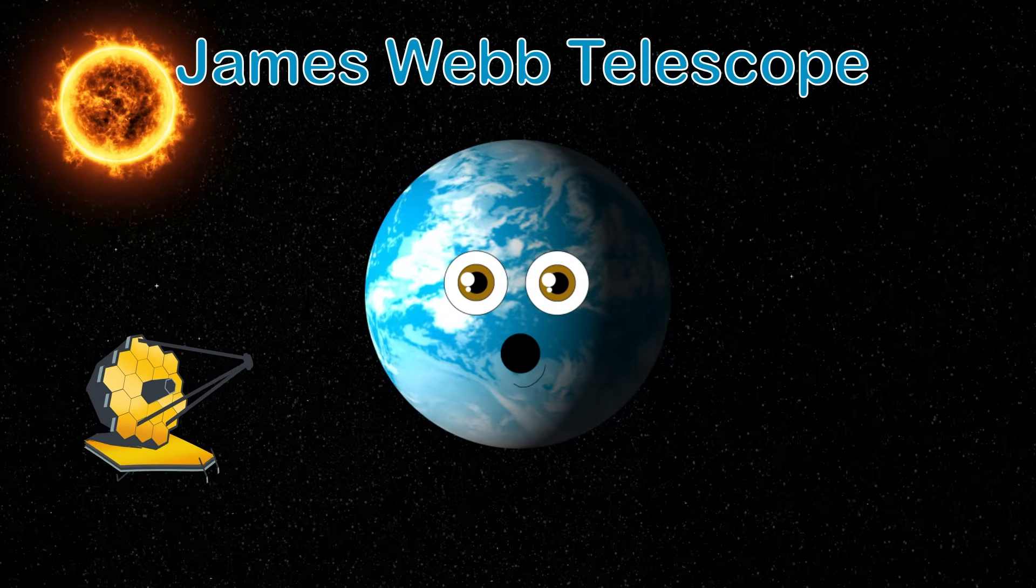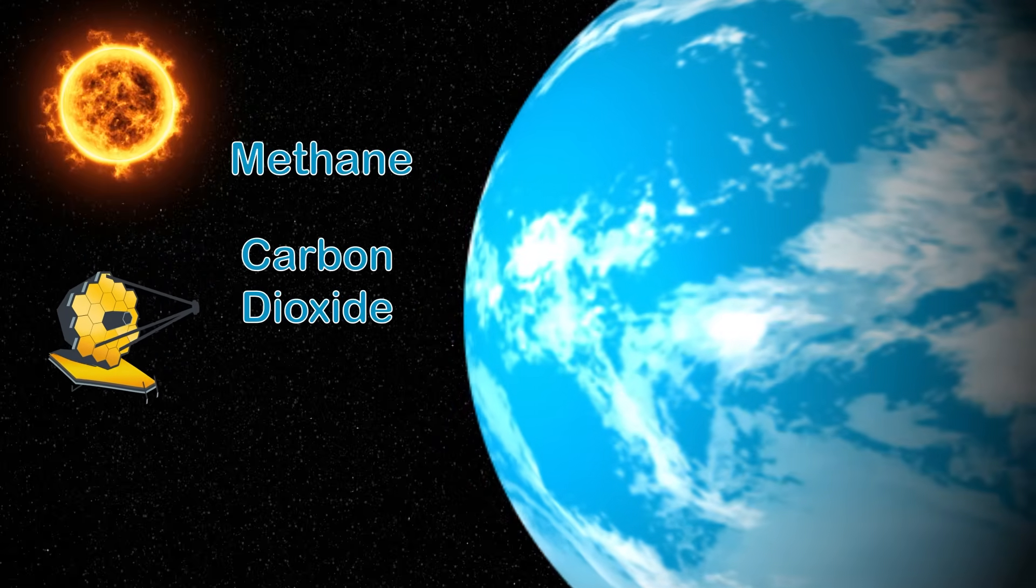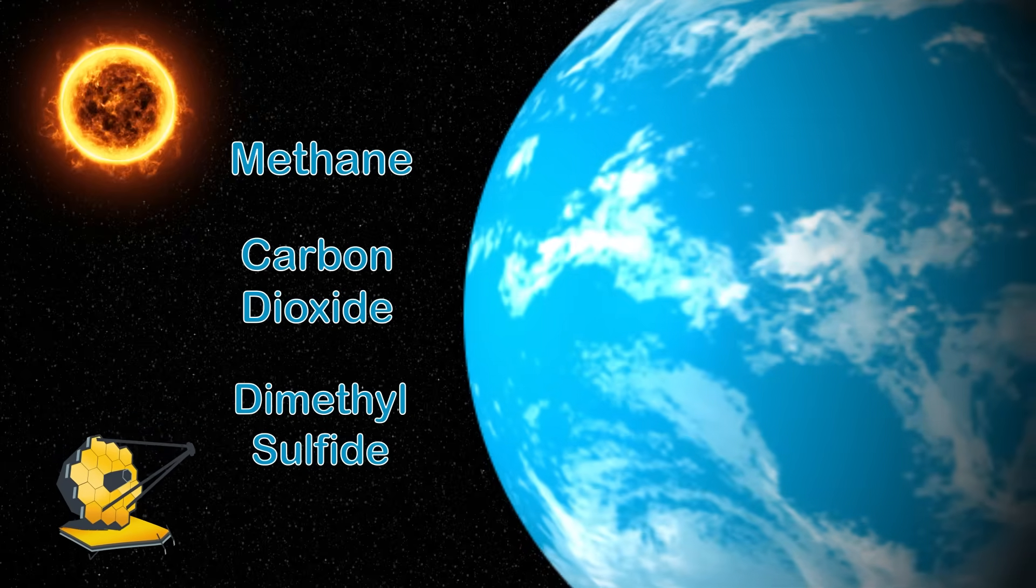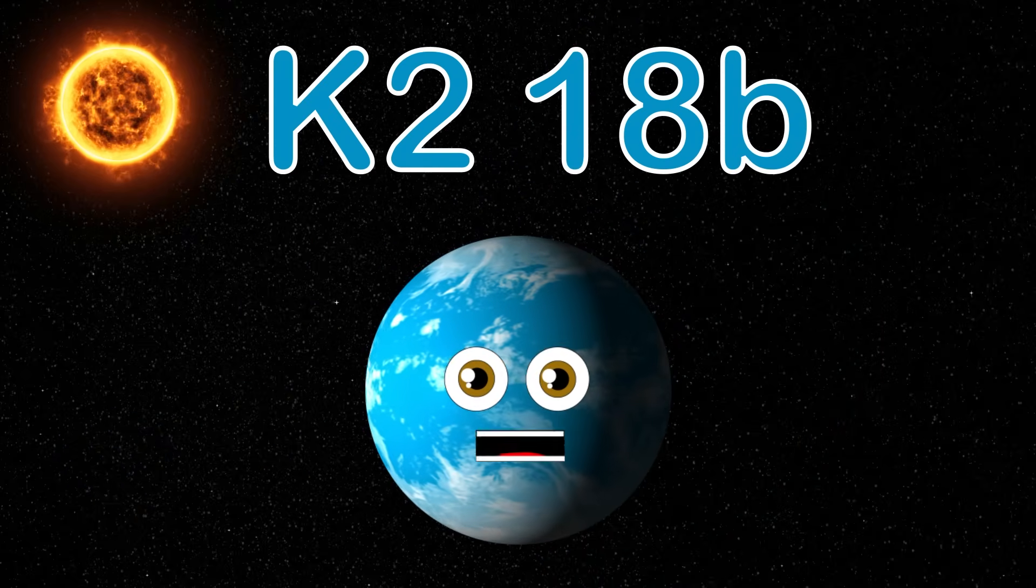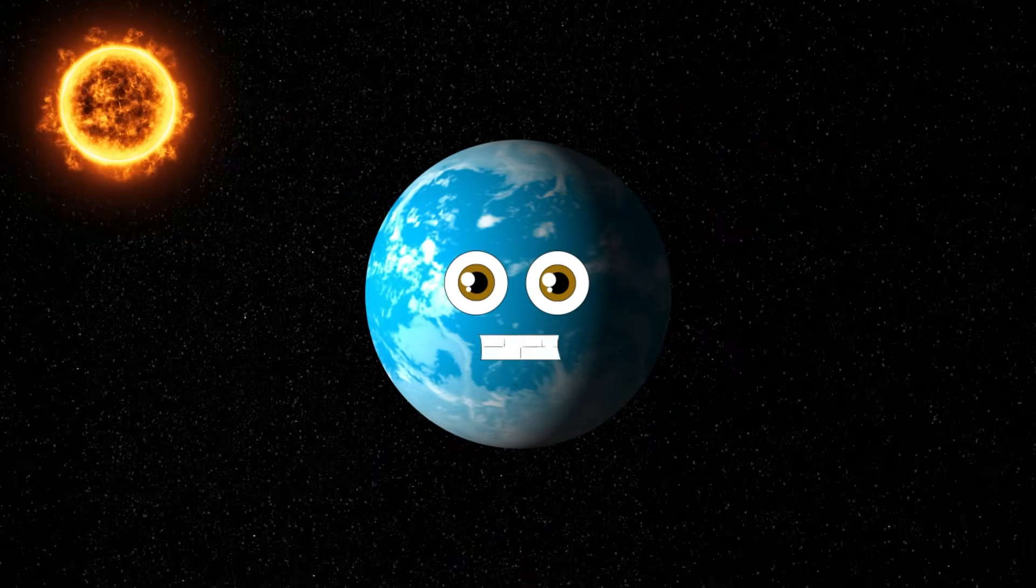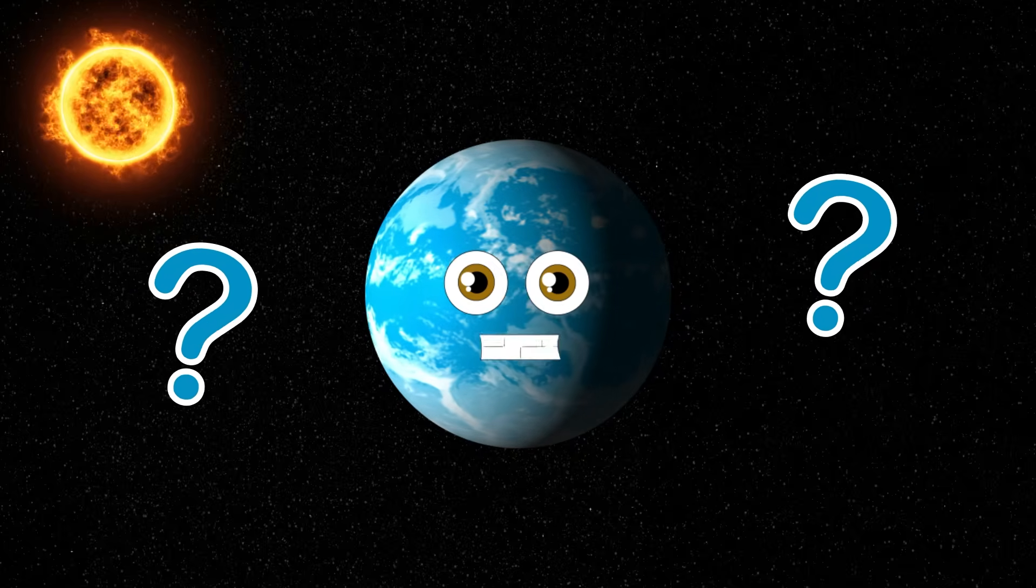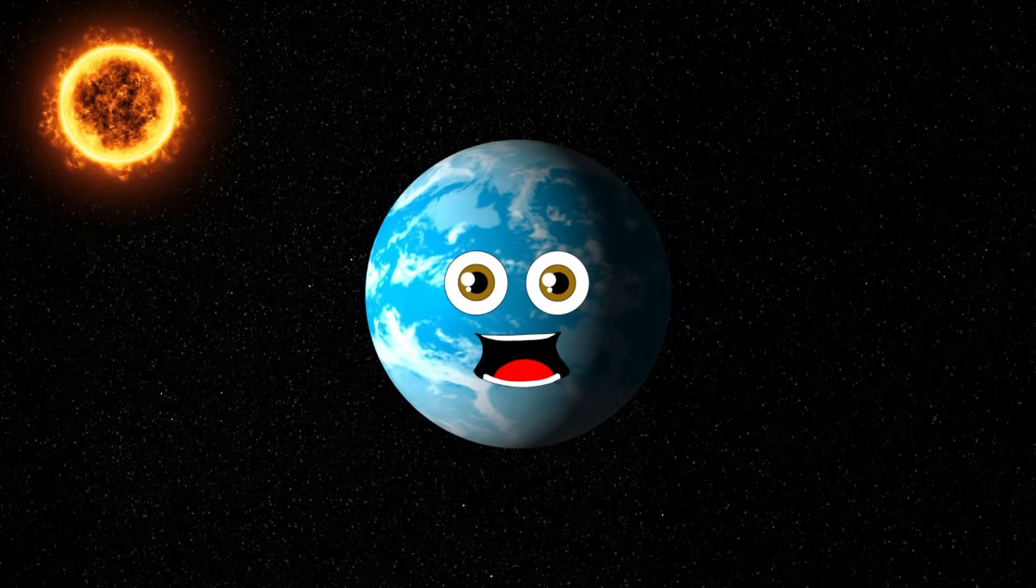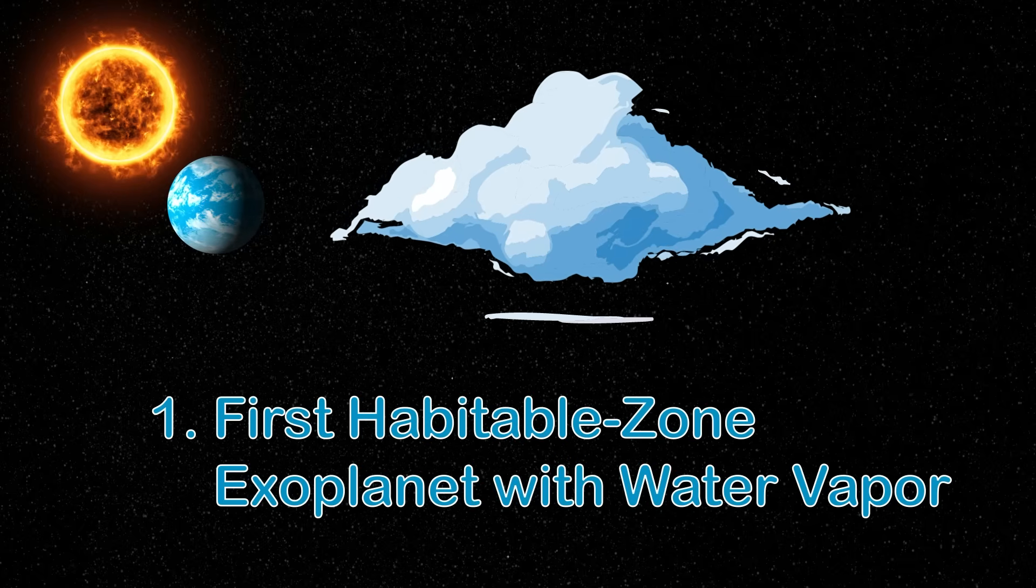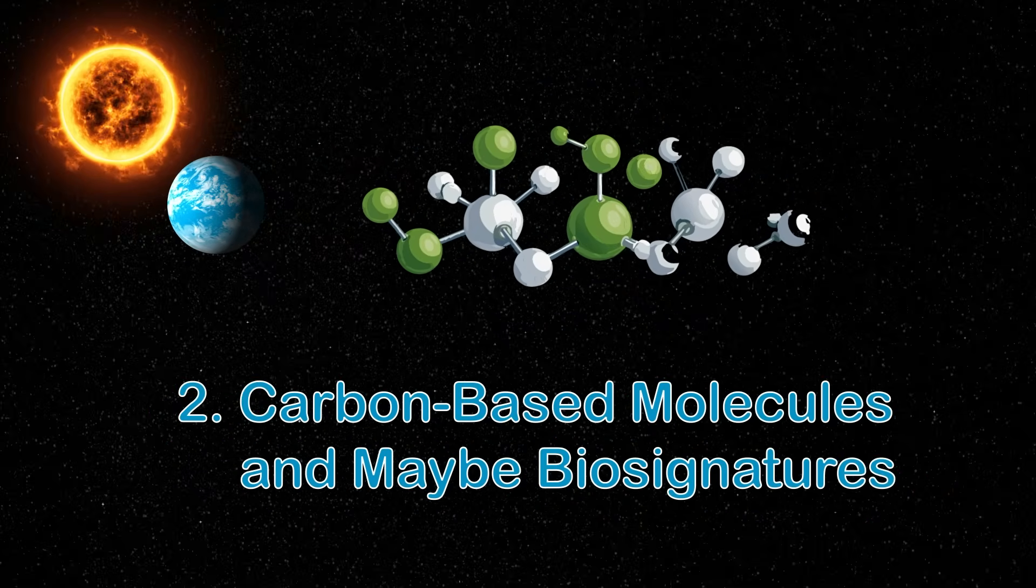The James Webb brought it to the next level without objection. Webb saw the presence of methane and carbon dioxide and potential biosignature gas, dimethyl sulfide. So why am I so special? First habitable zone exoplanet with water vapor. Carbon-based molecules and maybe biosignatures. A new class of potentially habitable world, Hycean planets. It challenges the Earth-centric view of life.